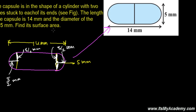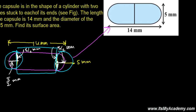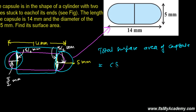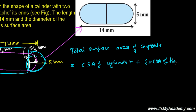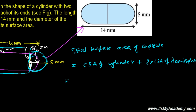To find the total surface area of the capsule, we find the curved surface area of the cylinder, plus the curved surface area of each hemisphere. So the total surface area equals the curved surface area of the cylinder plus twice the curved surface area of one hemisphere.